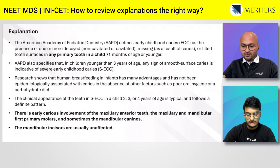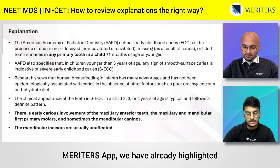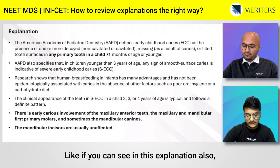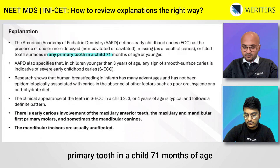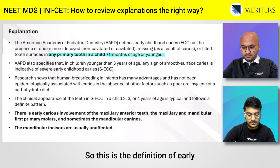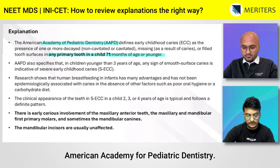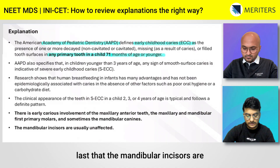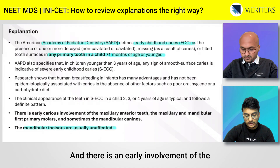If you open our explanations from the Meritors app, we have already highlighted the important points in each question. In this explanation, the first highlighted point is 'any primary tooth in a child 71 months of age or younger' — this is the definition of early childhood caries as given by the AAPD, the American Academy of Pediatric Dentistry. Similarly, we have highlighted that mandibular incisors are usually the unaffected ones and there is early involvement of the maxillary teeth.